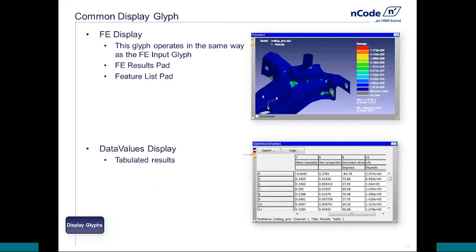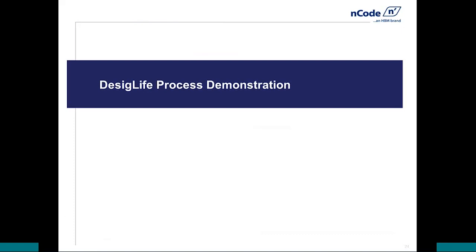The last box in the Five Box Trick is displaying the results. We can display results on a contour plot — showing damage or life — which is the most common view. We can also display that data in a table. While you wouldn't want every nodal result in a table for a large model, if you've narrowed the list to critical areas — perhaps 100 rows or fewer — a tabular view can be efficient.